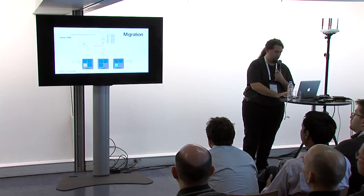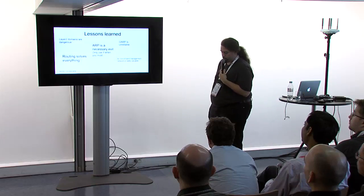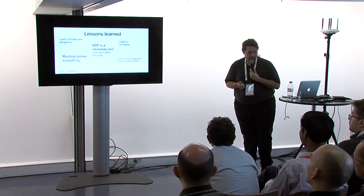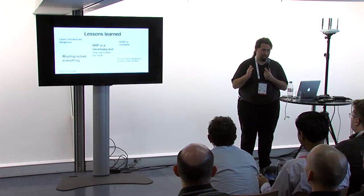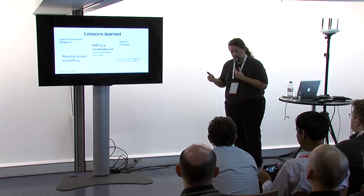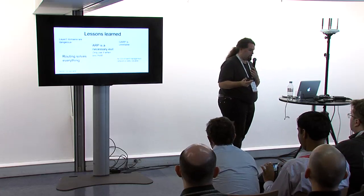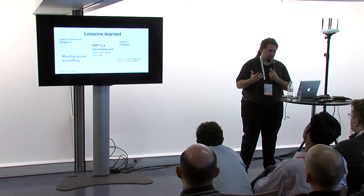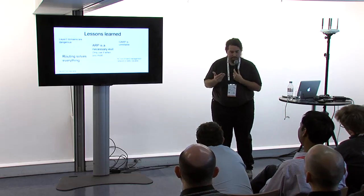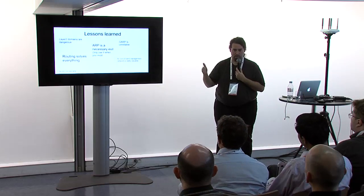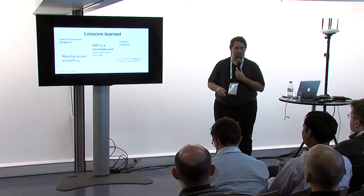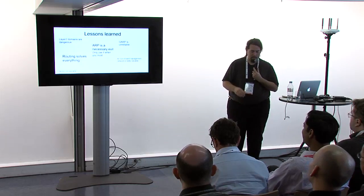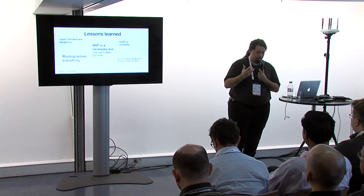Key lessons learned setting up OpenStack clusters: Layer 2 domains are dangerous — Layer 2 is almost binary, either working or completely broken with no clear debugging path. The goal should always be to scale down Layer 2 domains as small as possible, using Layer 2 only when necessary. ARP is a necessary evil: it's a security risk, a risk to infrastructure stability, and inefficient by design — broadcasting to thousands of devices. Cutting down on ARP is critical for scaling.